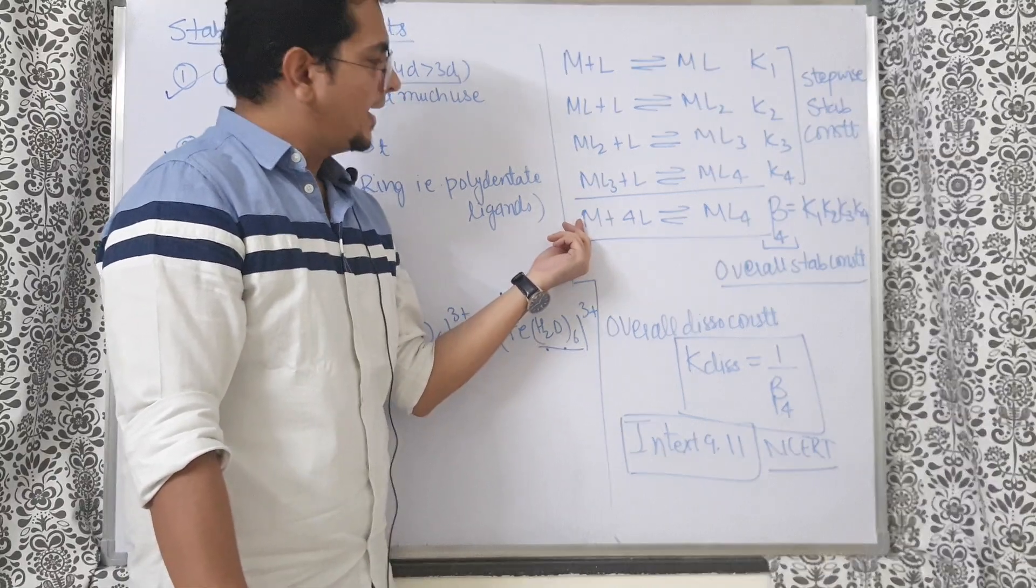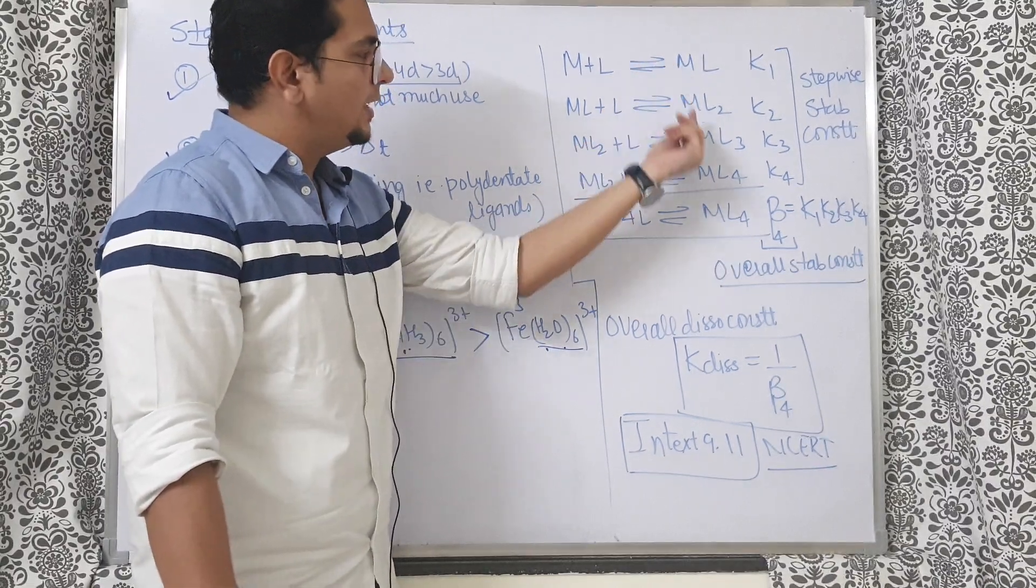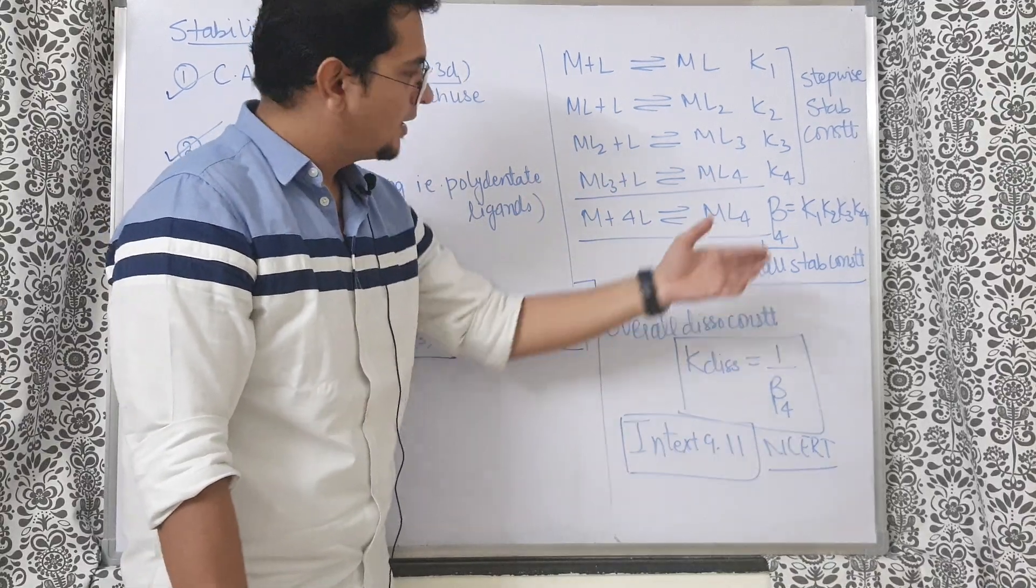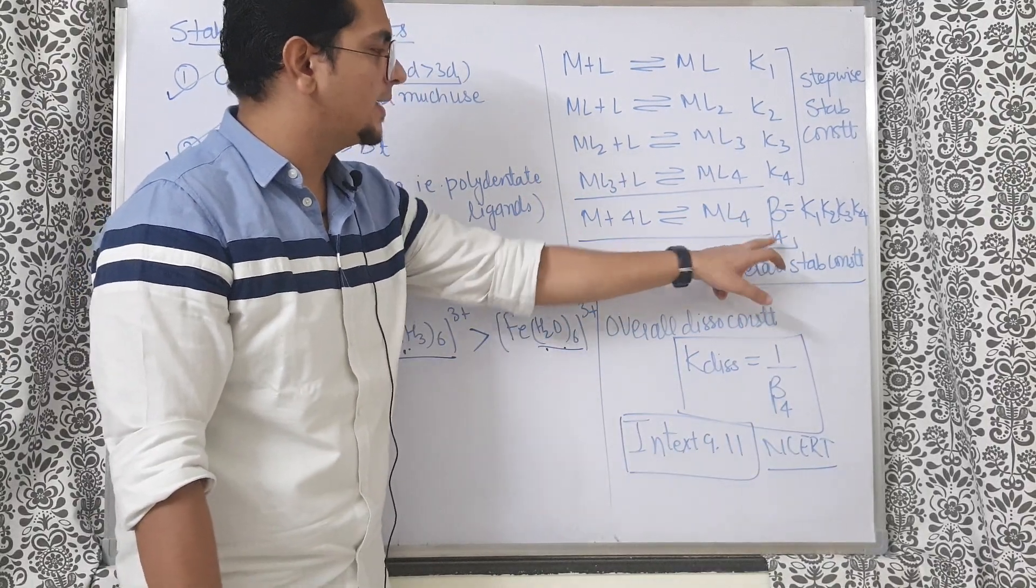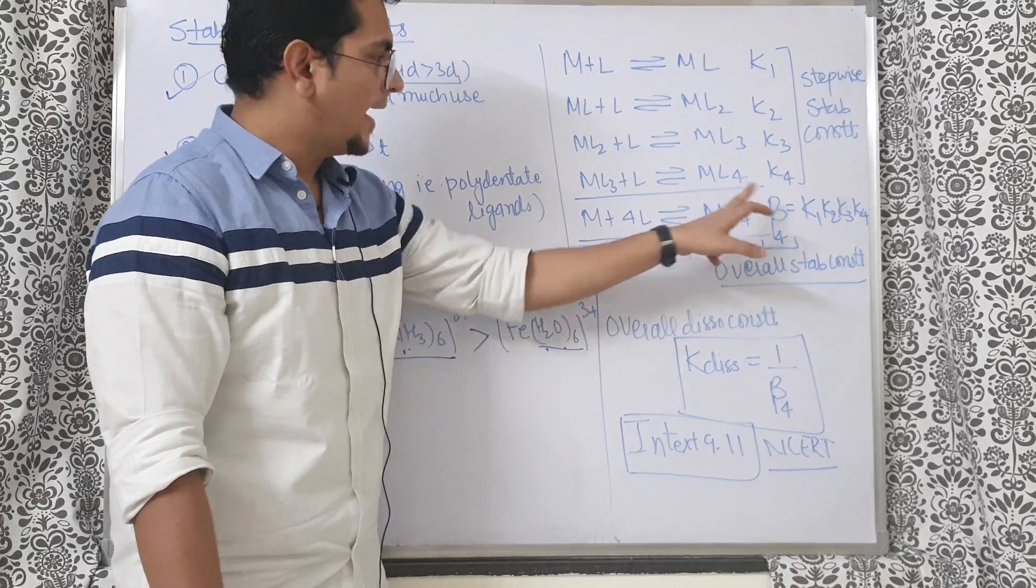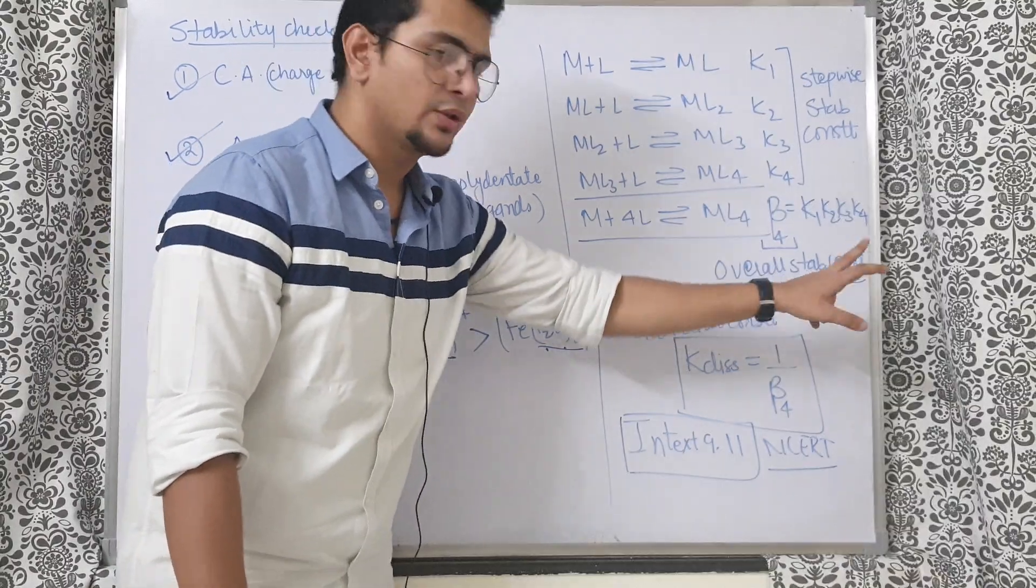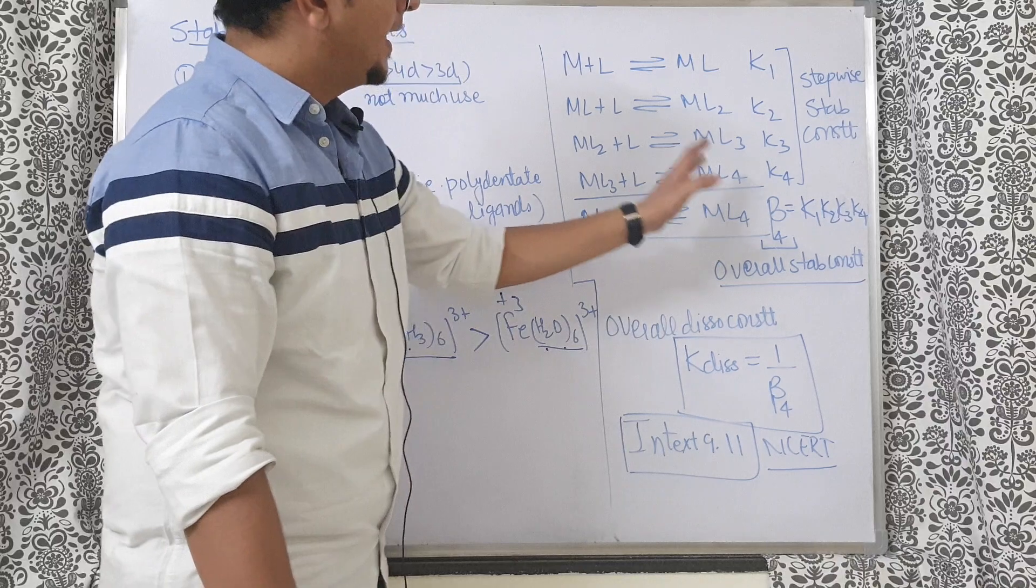So beta 4 is the symbol given. This 4 represents how many ligands are added here. Beta is the symbol for stability constant, overall stability constant. It will be equal to K1 into K2 into K3 into K4.